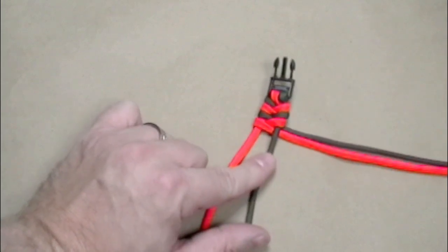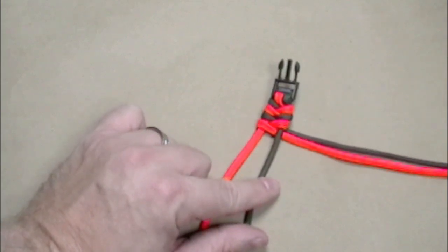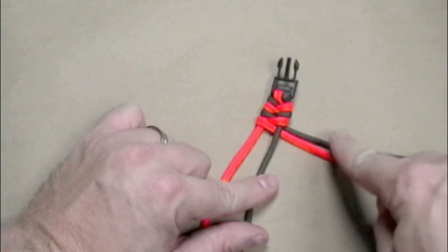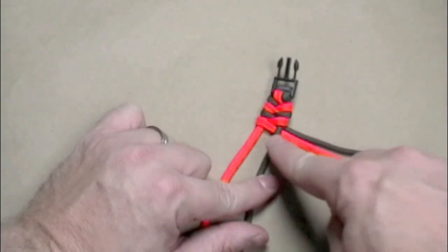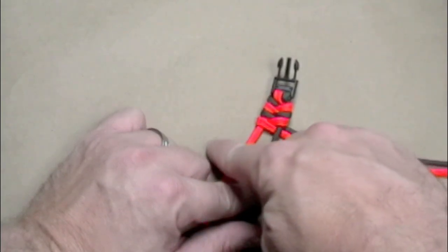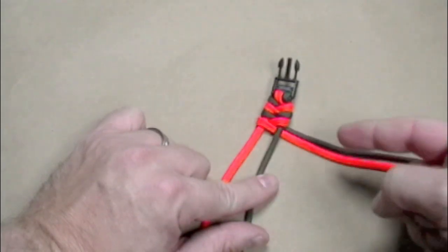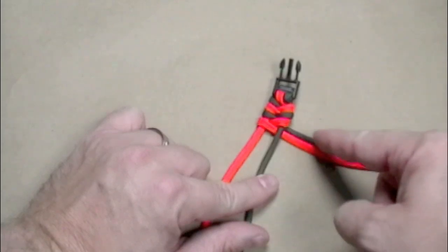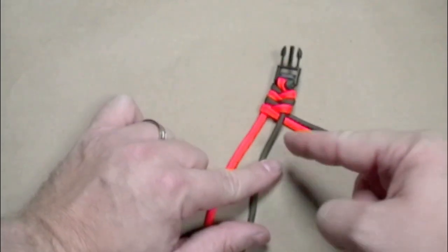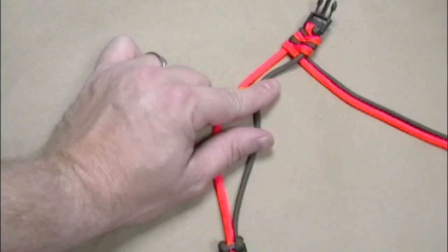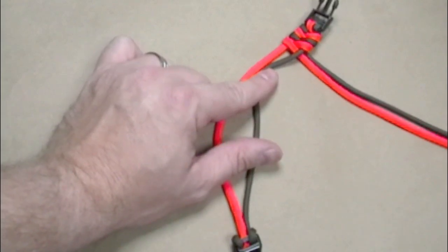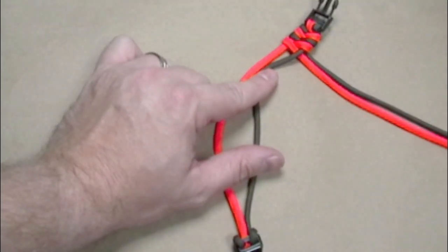I'm going to pause the video here and continue on down the bracelet. Again, you want to just take the top cord, go over, under, and loop it back around over, under, and pull it tight. Keep repeating with the alternating colors as you go down the bracelet. I'll pause this now and we'll pick back up at the end of the bracelet.